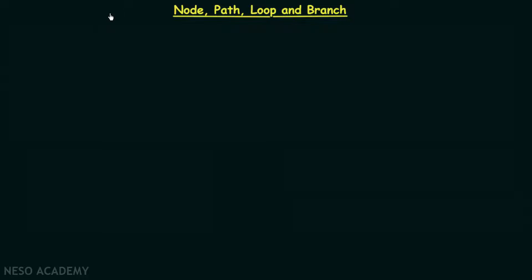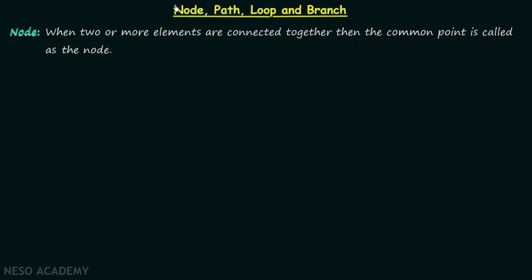We are going to have a discussion on node, path, loop, and branch of a network. We will first begin with node. When two or more elements are connected together, the common point is called a node. Depending on the number of elements connected together, there are two types of nodes.